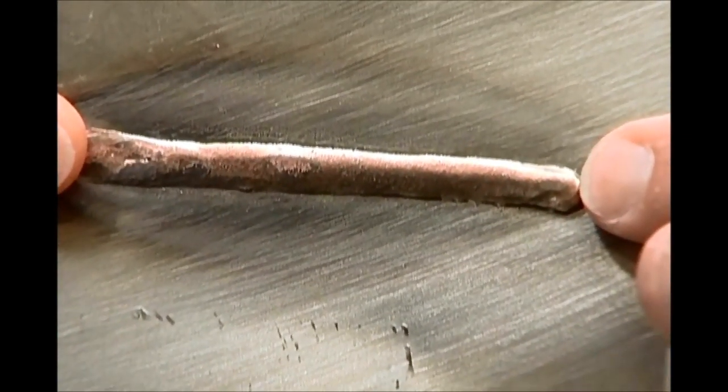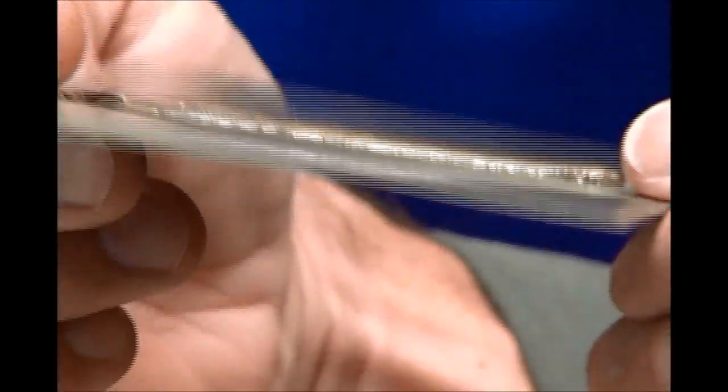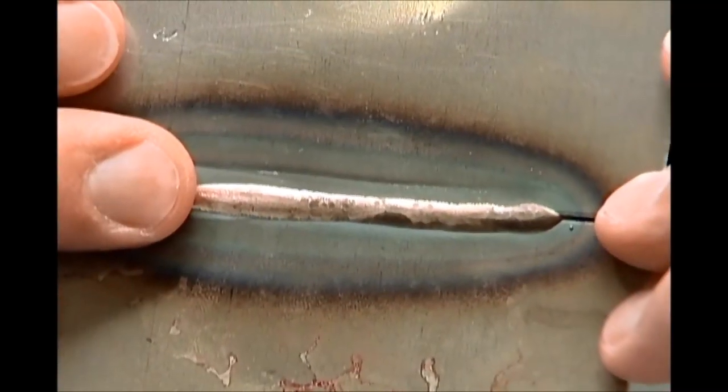This low melt temperature reduces the heat affected zone, panel distortion, and the amount of zinc that's burned away on corrosion protected panels.